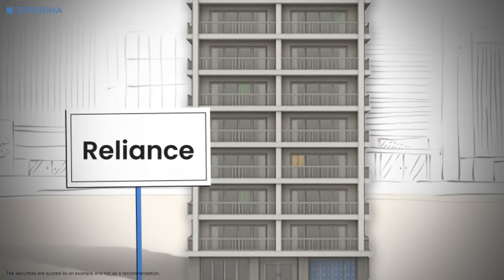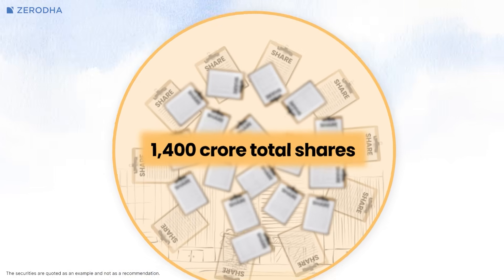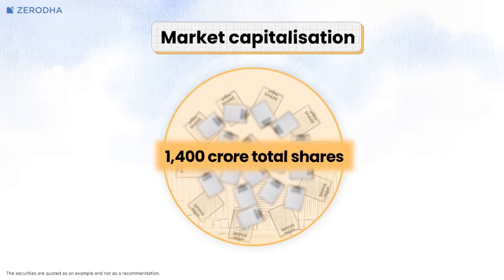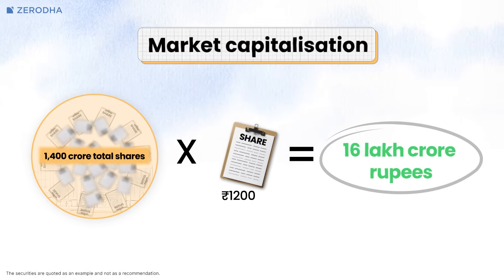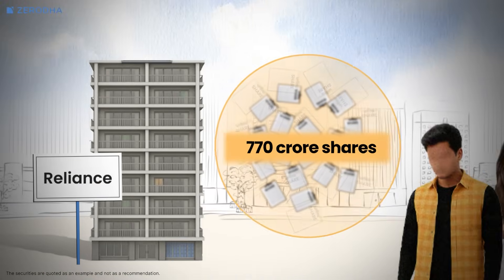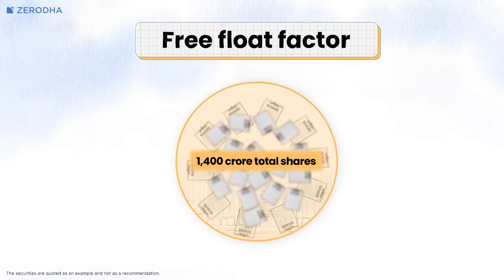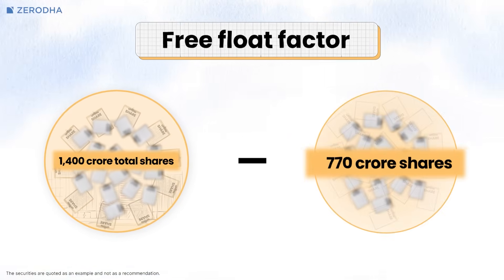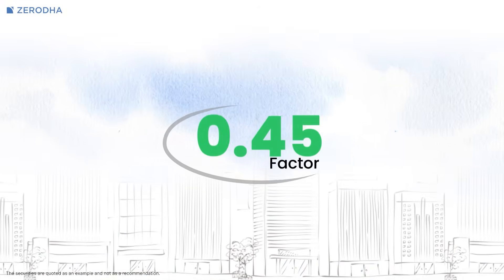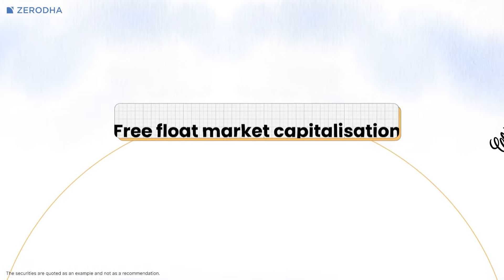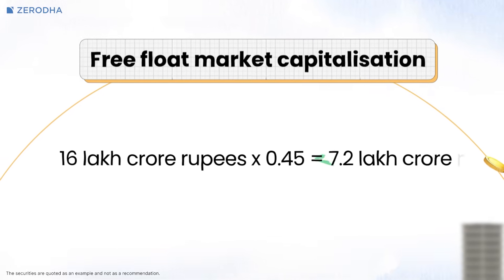Let's understand this with an example. Suppose Reliance Industries has a share price of 1,200 rupees and 1,400 crore total shares. The market capitalization of Reliance would be 1,400 crore shares times 1,200 rupees per share, which is 16 lakh crore rupees. Now let's say 770 crore shares are held by promoters and are not available for public trading. The free float factor would be (1,400 crore minus 770 crore) divided by 1,400 crore, which equals 0.45. So the free float market capitalization of Reliance would be 16 lakh crore rupees times 0.45, which is 7.2 lakh crore rupees.